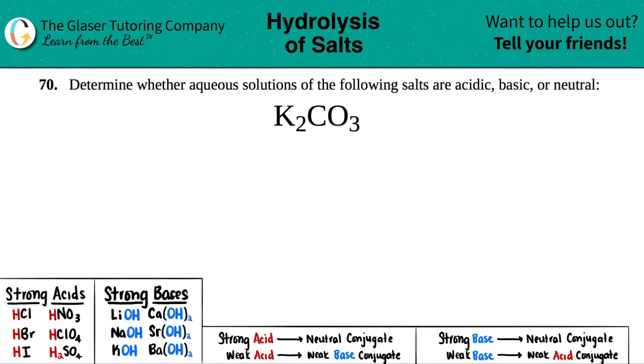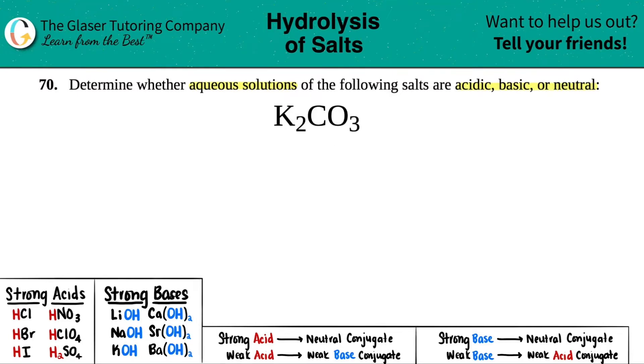Number 7D: determine whether aqueous solutions of the following salts are acidic, basic, or neutral. In this case, we have potassium carbonate.